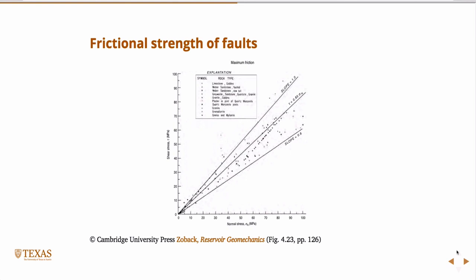At the instant that it slips, if you plot that point - normal stress versus shear stress as a function of normal stress - you plot these dots. This is the collection from all these different types of rocks. And you see that essentially, in no case does it ever occur below 0.6. The value is almost always from 0.6 to 1.